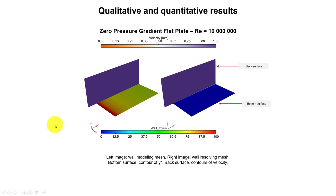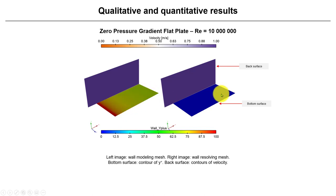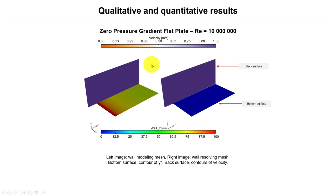Here we compare the flat plate y+ distributions. The y+ in the wall-modeled mesh is relatively large — more than 30, less than 100. In the wall-resolved mesh, y+ is less than one, probably around 0.05 — a very low value. Displaying the back surface, you can see the velocity and observe the difference between the two meshes.